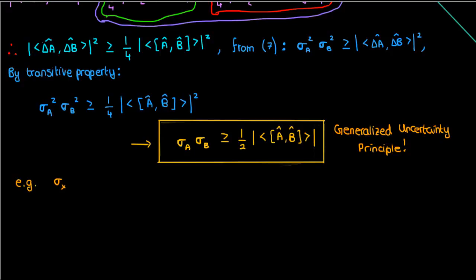For example, the uncertainty in the position of a particle times the uncertainty in its momentum is greater than or equal to half the magnitude of the expectation value of the commutator of x̂ and p̂. Later on, we'll show that this right-hand side becomes ℏ/2, where ℏ is the reduced Planck constant — the famous Heisenberg uncertainty principle.